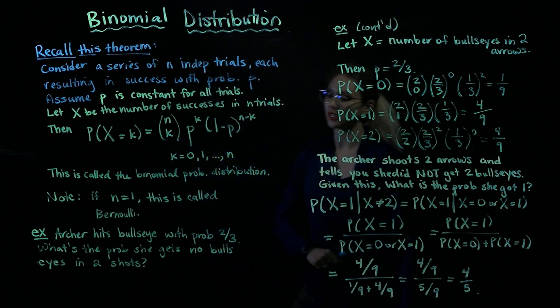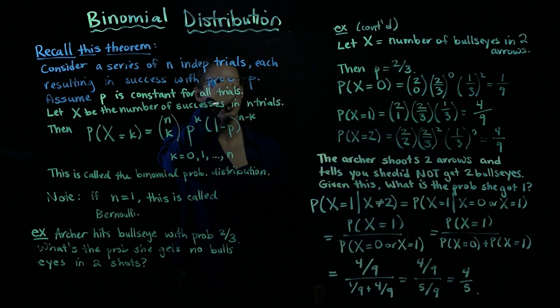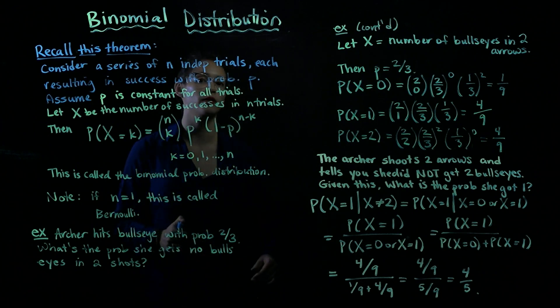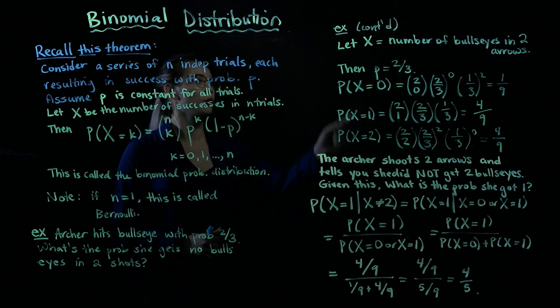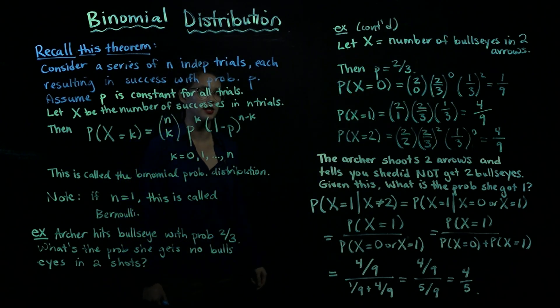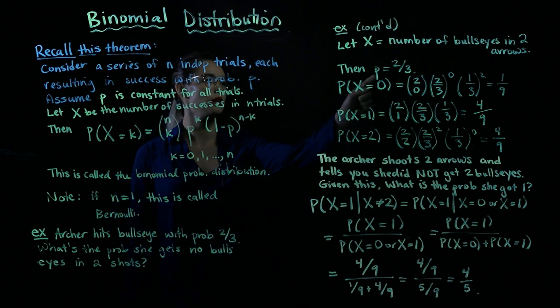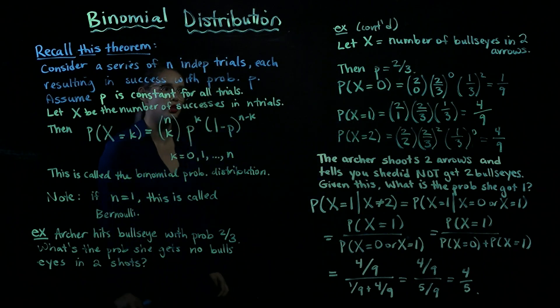An archer hits a bullseye with probability 2 thirds, what's the probability that she gets no bullseyes in two shots? And we are going to assume that these two arrows are independent. Okay, so let's define some stuff, get organized. It's a good thing to do whenever you're working with probability. We're going to define x as the number of bullseyes that she hits in two arrows. We said earlier that the probability of her success is 2 thirds, so p is equal to 2 thirds.